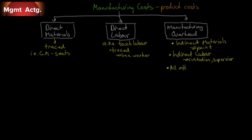Finally, manufacturing overhead covers all other manufacturing costs that are not direct labor or direct materials. These include utilities for running the factory, rent for the facility, and depreciation of equipment and the building. In other words, anything that's not direct material or direct labor is manufacturing overhead.